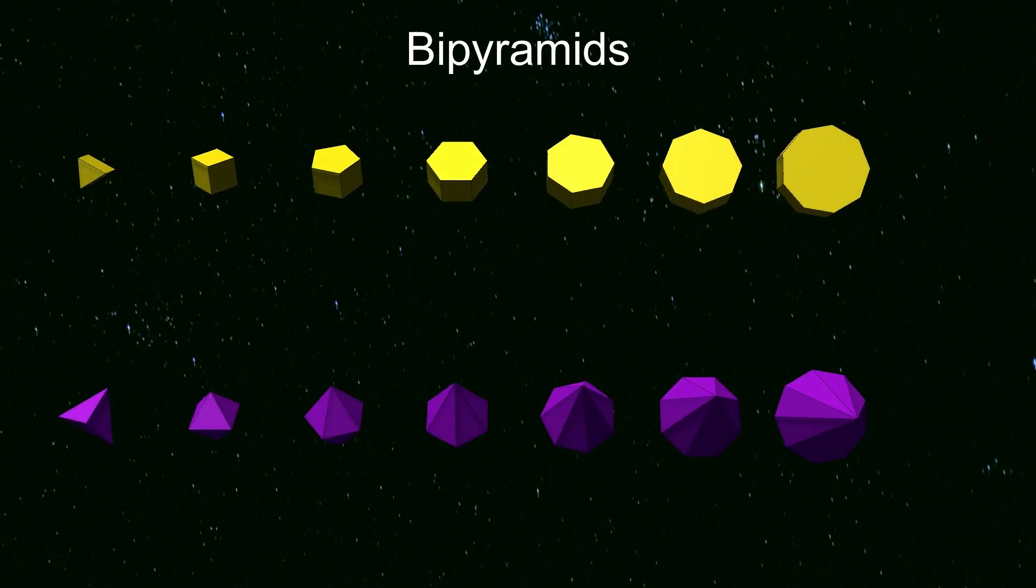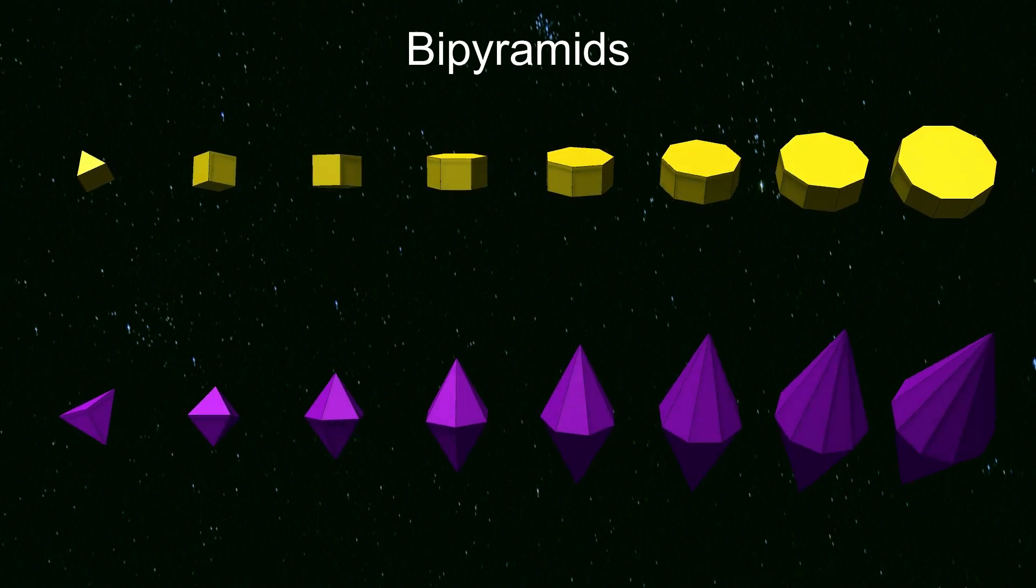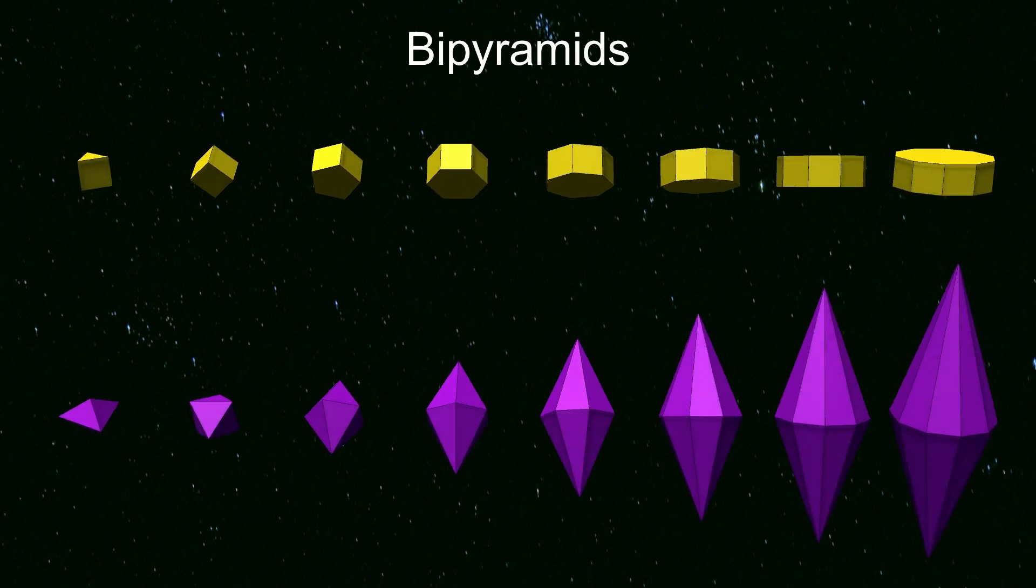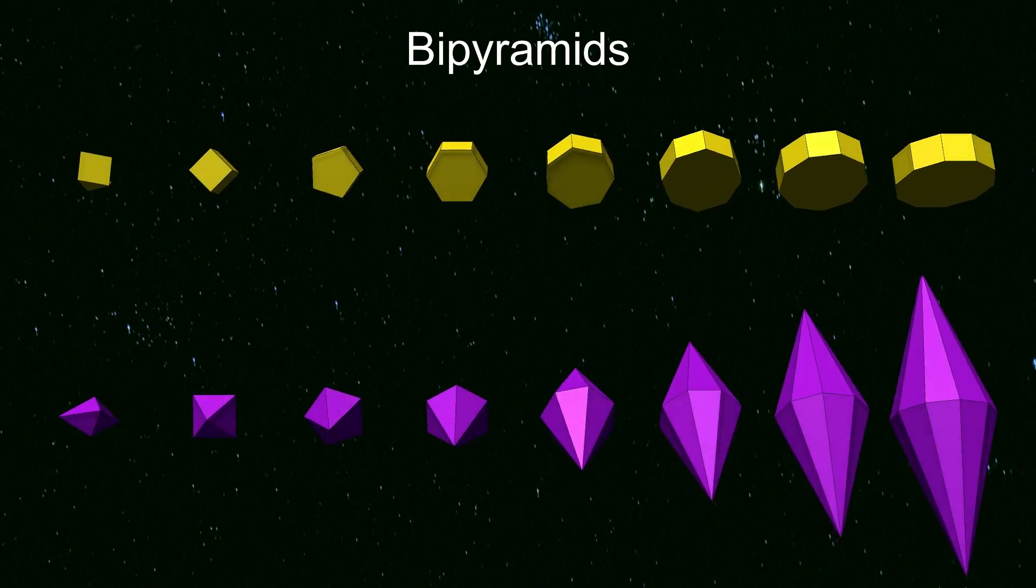As the number of sides increases, the prisms have an increasingly flat appearance, so the dual bipyramids become proportionally taller.